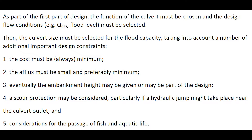As part of the first stage of design, the function and purpose of the culvert must be chosen, and the design conditions must be selected. Next, the culvert size must be selected for the flood capacity, taking into account a number of additional design constraints: the cost must be minimum, the afflux must be small or minimum, the embankment height may be given or may be part of the design, scour protection is typically required at the outlet, and consideration for the passage of fish and aquatic life might be relevant.